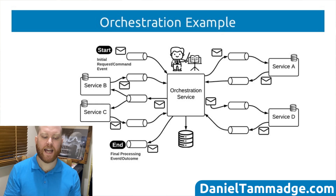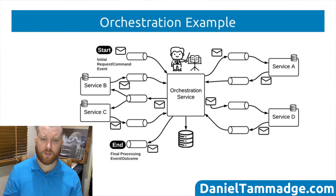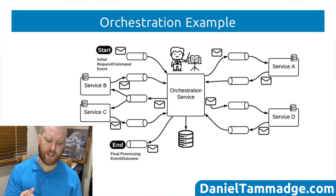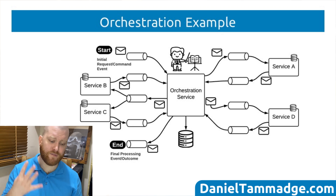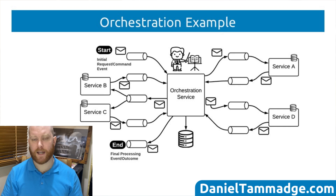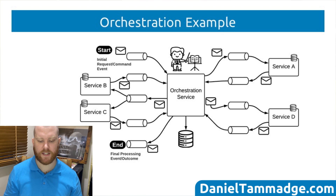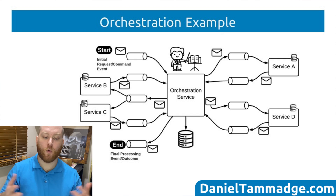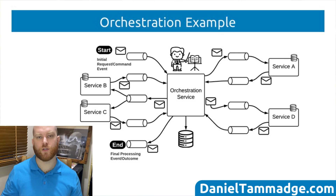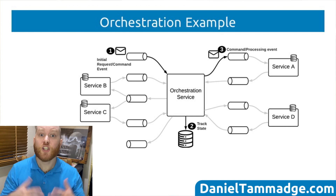Now let's get into the example. Don't be scared by the diagram showing all the connections, as I will be walking you through step by step. At a high level, a simple orchestration process could have one orchestration service with a persistent data store and four worker services with their own databases. There is also an initial command event topic for the process, multiple event topics for processing events, and a final topic where the outcome of the full process is published to notify interested subscribers.